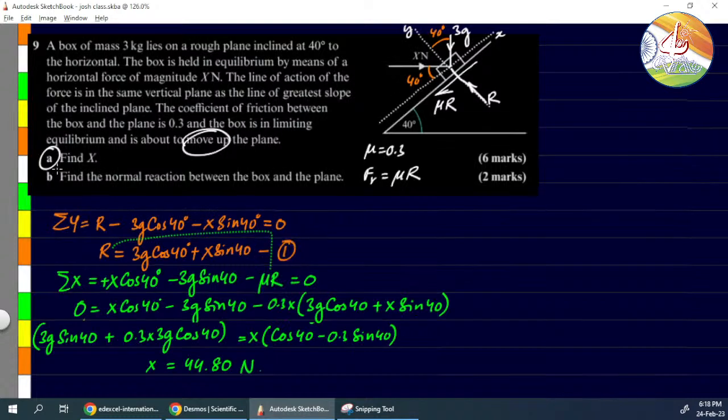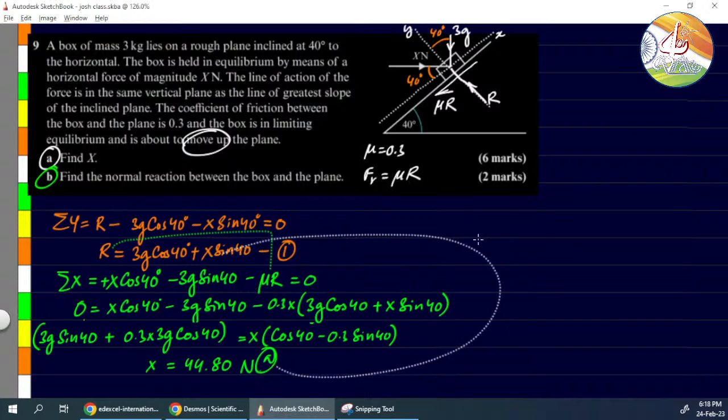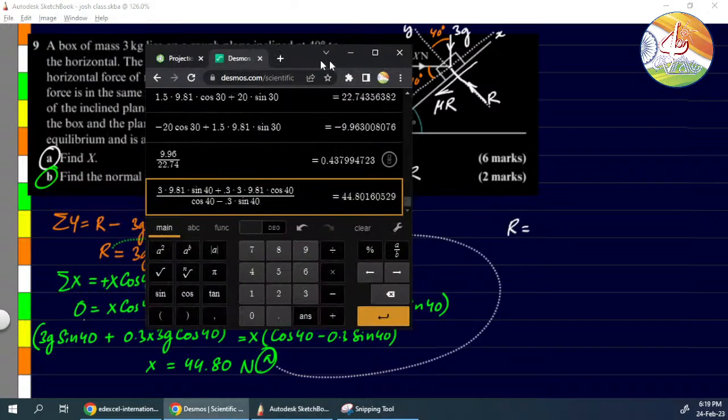Next, he is also asking part b. This is part a. Part b is asking to find the normal reaction. So for normal reaction, we should take this value and feed it back here. Take a different color. Take this value, feed it back here.